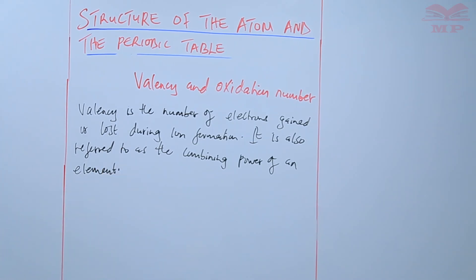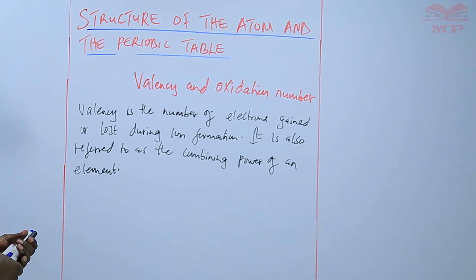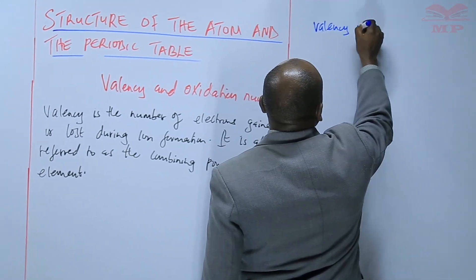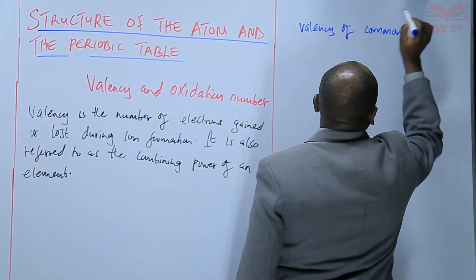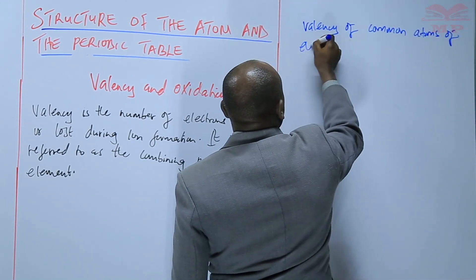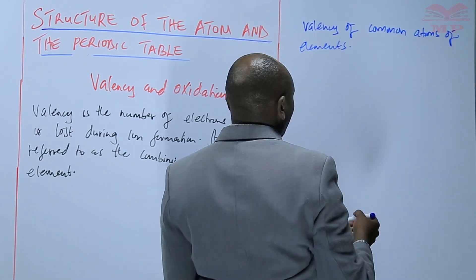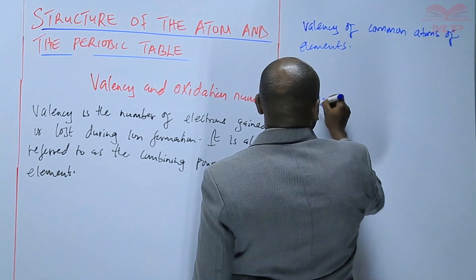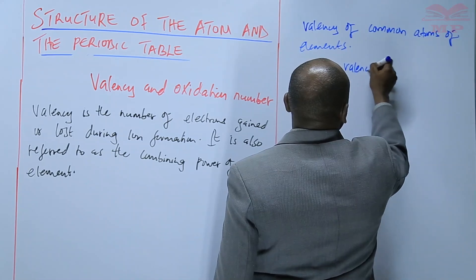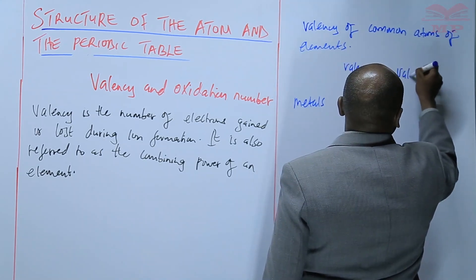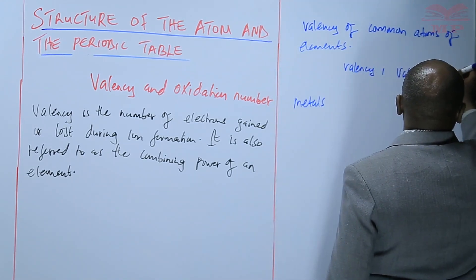We are going to discuss the valency of common elements — common atoms of elements. For metals, there are those that have a valency of 1, those that have a valency of 2, and those that have a valency of 3.